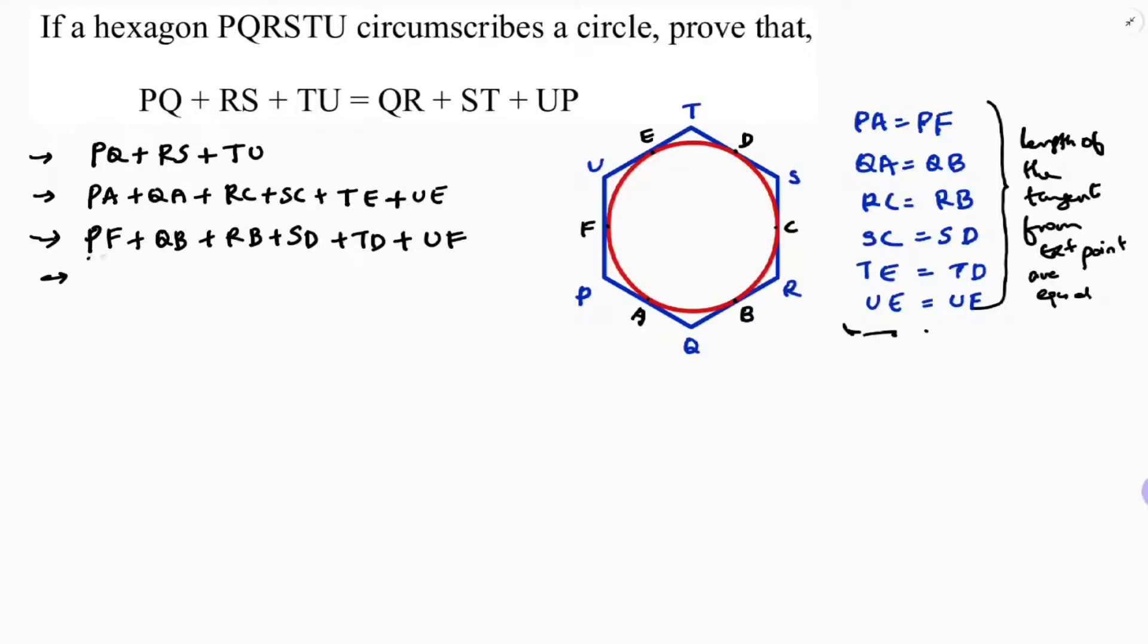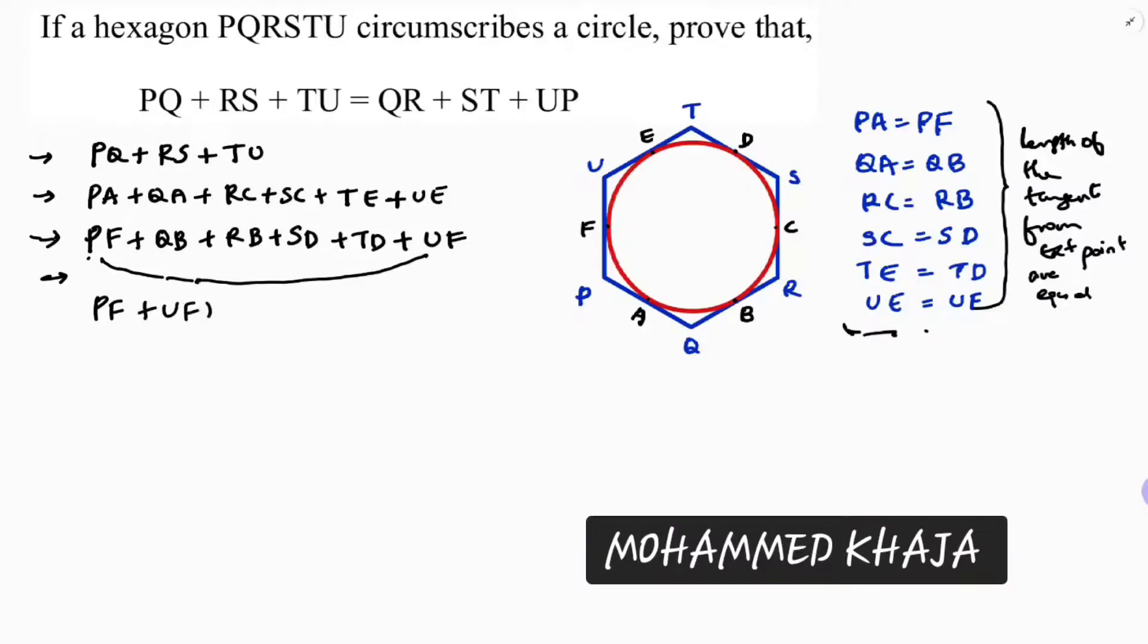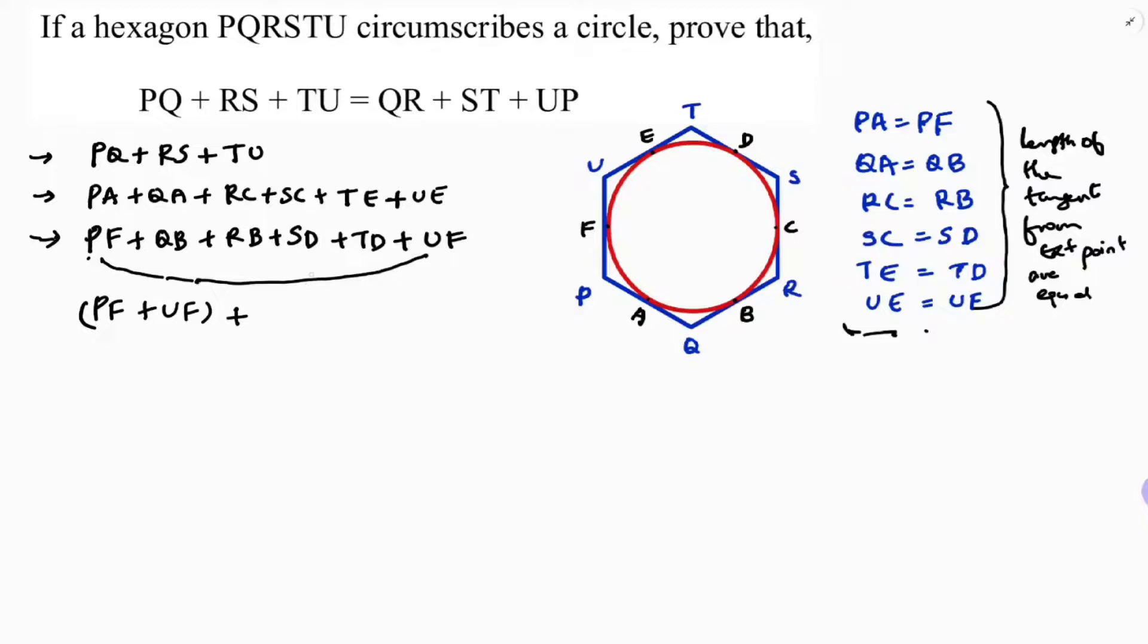Now if you will see, PF and UF, these two. PF + UF. Next, QB + RB. SD + TD. So PF + UF is PU, or you can write UP. QB + RB is QR. SD + TD is ST. So we got RHS.